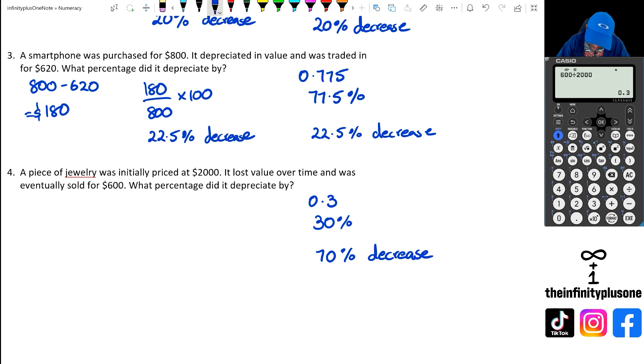Because what we're going to do is 100 minus 30, and that's going to give us a 70% decrease. But let's have a look at doing the long method. We're going to do 2000 take away 600, which equals $1400. Now, if it's $1400, we're going to put 1400 out of 2000 and multiply it by 100. And when we do this, we should get our percentage decrease. So I've got 1400 over 2000 multiplied by 100. And as you can see, that's going to give me a 70% decrease.